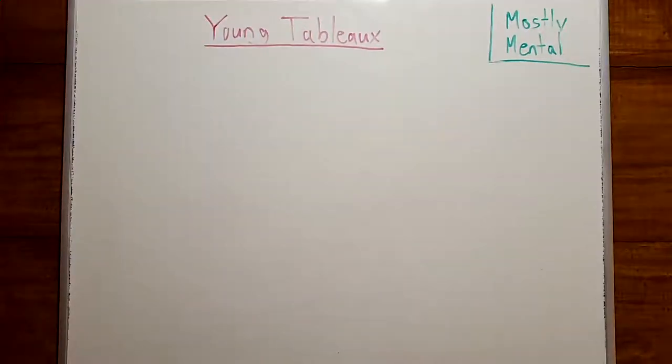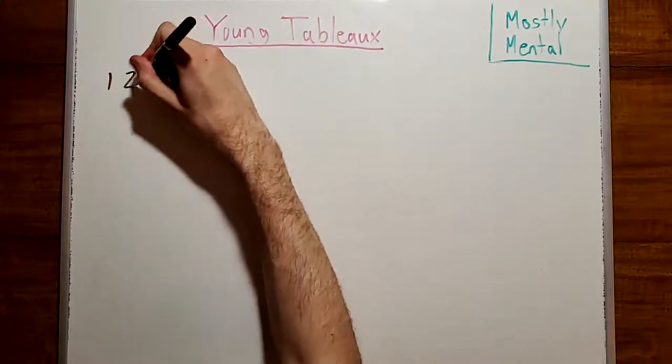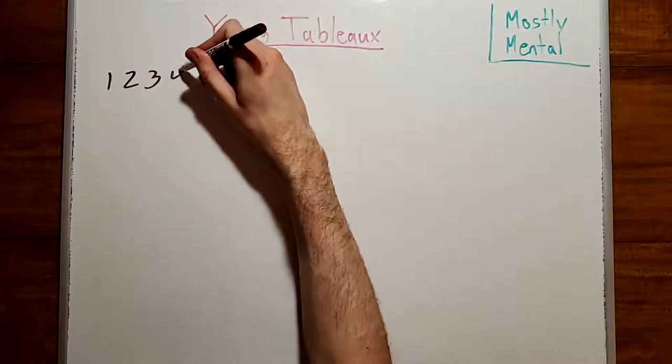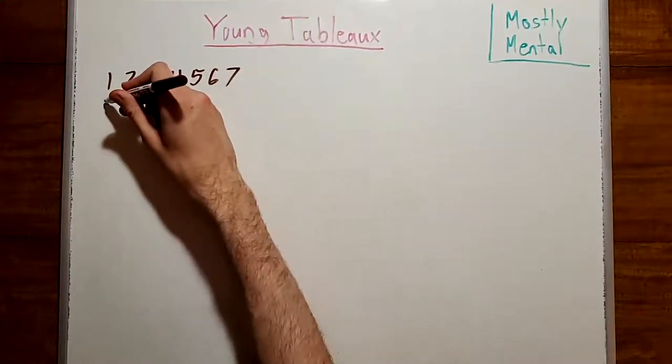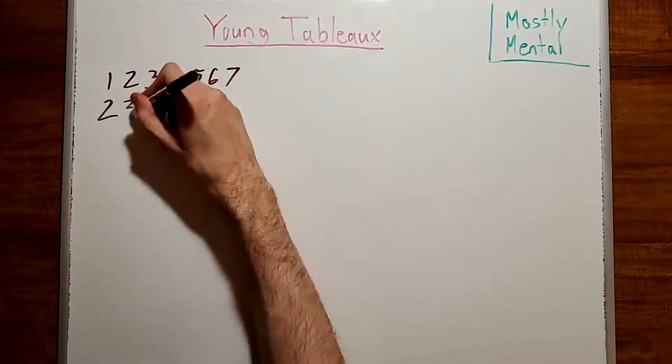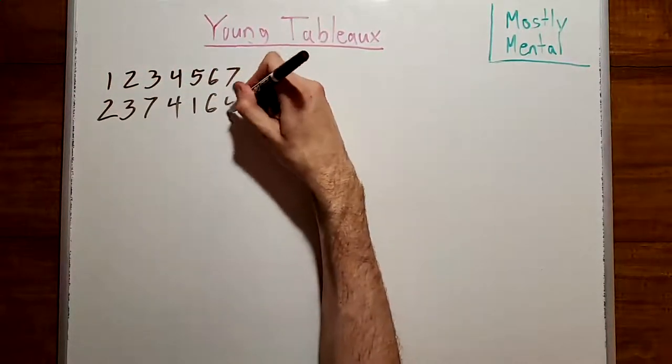The first thing I'd like to show you is a really pretty correspondence between permutations and pairs of Young Tableaux of the same shape. For instance, let's say we have a permutation that takes the numbers 1, 2, 3, 4, 5, 6, 7, and maps them onto the numbers 2, 3, 7, 4, 1, 6, 5.